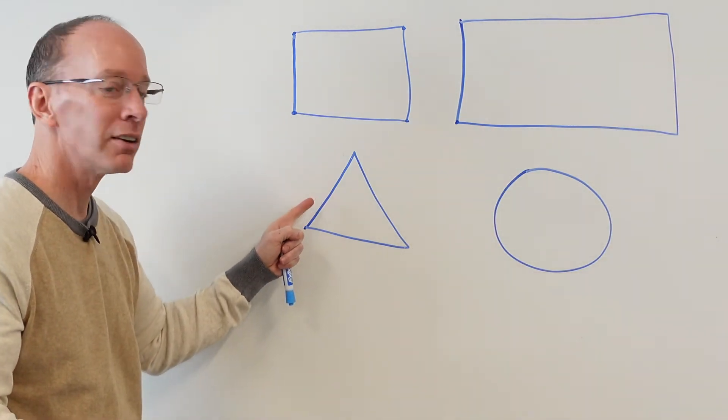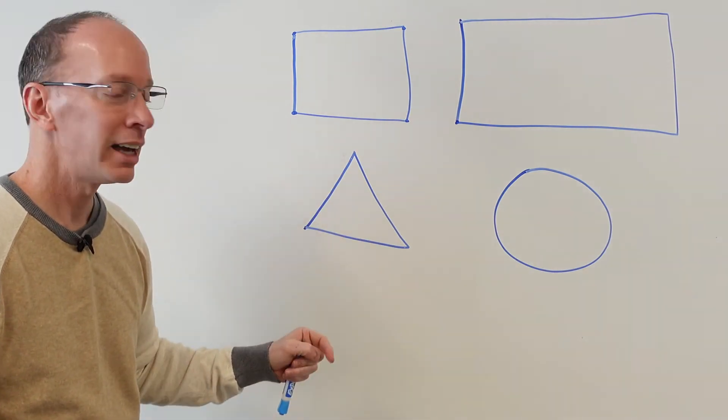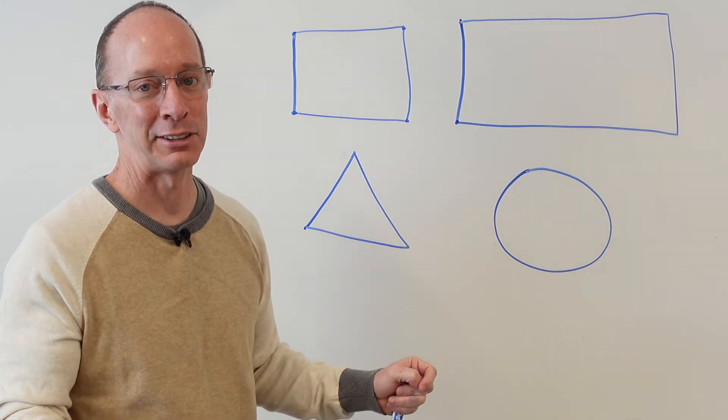A triangle has three sides and three vertices. And a circle has zero sides and zero vertices.